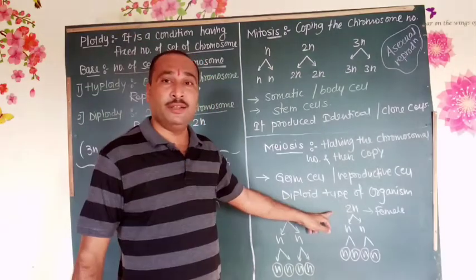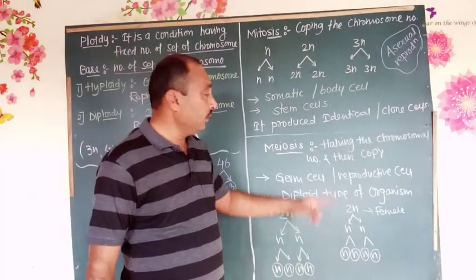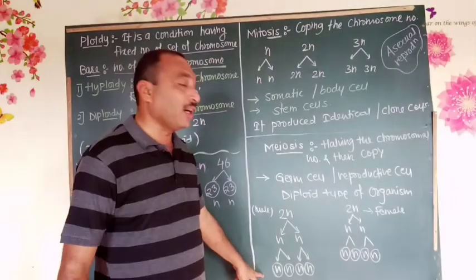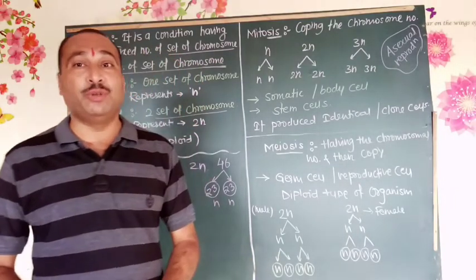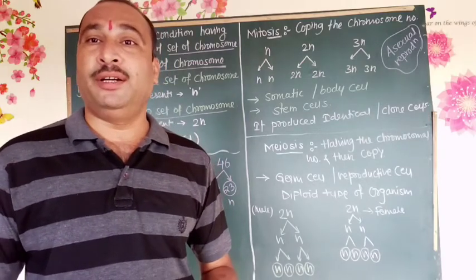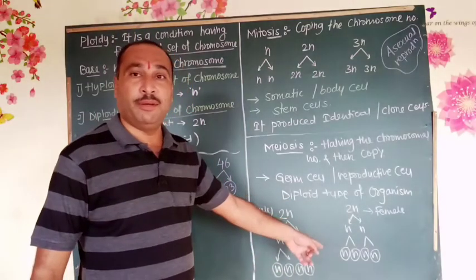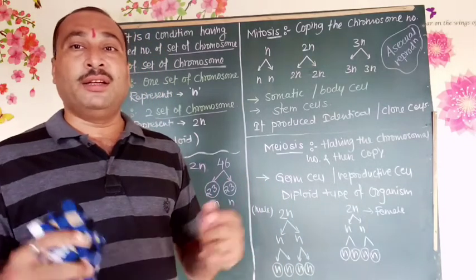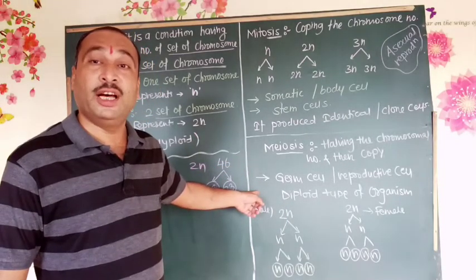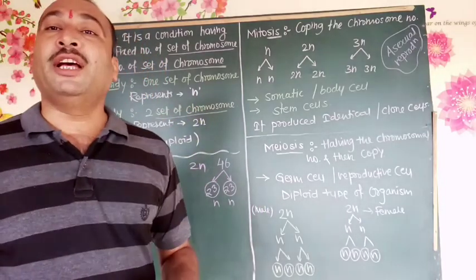The same condition happens in the female. So in meiosis, there is halving of the number of chromosomes and then carrying out a copy. The male produces 4 gametes. These gametes directly take part in sexual reproduction — reproduction which takes place using the formation of gametes. Male gametes and female gametes fuse together in a process called fertilization. Meiosis is seen generally in germ-line or reproductive cells of diploid organisms.